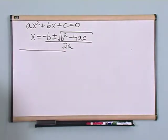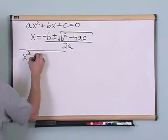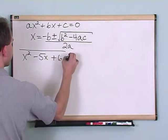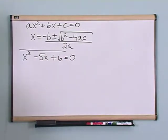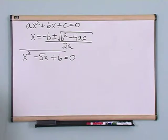So let's use this. Let's say our equation is x squared minus 5x plus 6 equals 0. That's our equation. And let's say you can't factor that, okay? How could you solve it with a quadratic formula?